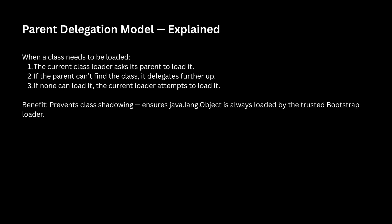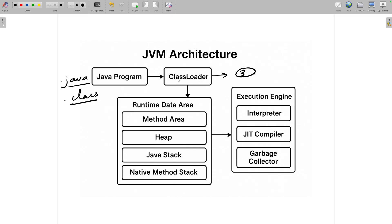In the parent delegation model, the current class loader asks its parent to load the class. If the parent cannot find it, it delegates further up, and if none can load it, the current loader attempts to load it itself. This prevents class shadowing and ensures that java.lang.Object is always loaded by the trusted Bootstrap Class Loader. The class loader also checks the dot class file for static blocks, static variables, non-static variables, and dependencies on other classes.